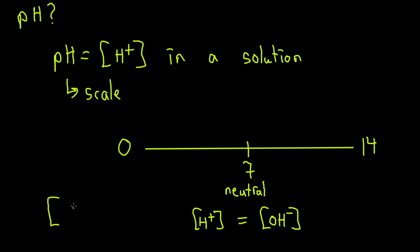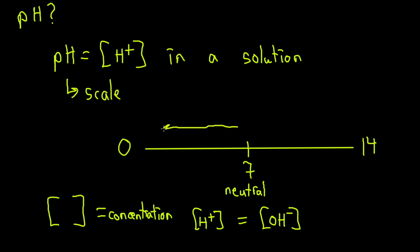These square brackets represent concentration in chemistry — this will be used a little bit further on when we do calculations. Now if we're going anywhere from 7 down to the left side toward 0, this will get more acidic as we approach 0. And moving to the right side, it will get more basic as we approach 14.